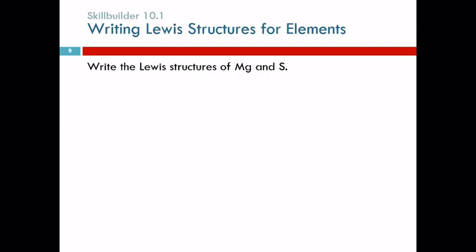Let's write the Lewis structures of magnesium and sulfur. To write the Lewis structure, you're going to first write the element symbol, and then you have to figure out how many valence electrons does magnesium have. What group is it in? Group 2A—two valence electrons. So draw two dots. You can draw them there, you can draw them like this, you can draw them like this, but don't pair them up.